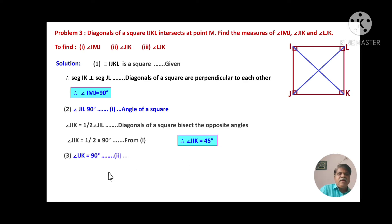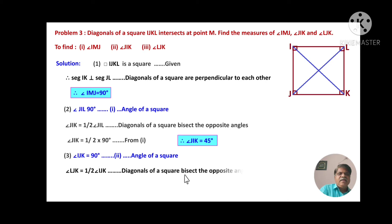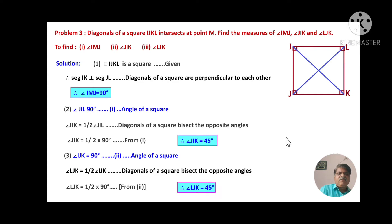Third, angle IJK equals 90 degrees — angle of the square. Angle LJK is half of angle IJK, by the diagonal property of the square. Therefore angle LJK equals half of 90, which is 45 degrees.